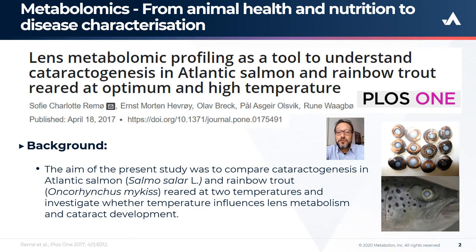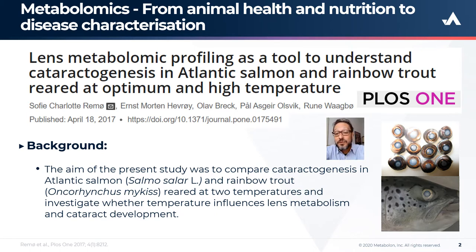The study was published in PLOS ONE in April 2017 by Rima et al., and the title is 'Lens Metabolic Profiling as a Tool to Understand Cataractogenesis in Atlantic Salmon and Rainbow Trout Reared at Optimum and High Temperatures.' The researchers examined cataract development in Atlantic Salmon and Rainbow Trout reared at optimum and high temperature. They obtained the global metabolic profiles of lenses from both species to investigate differences in lens metabolism and study metabolic changes caused by water temperature. This highlights Metabolon's experience working with over 100 different matrices — not just common ones like plasma, but in this case, fish lenses.